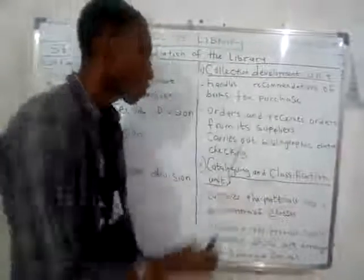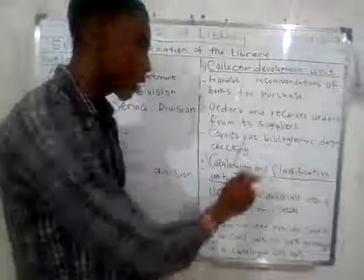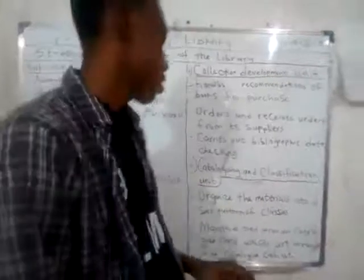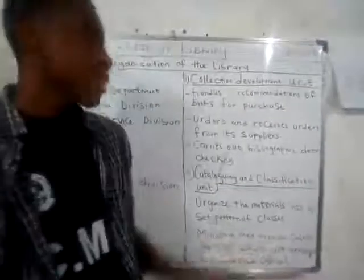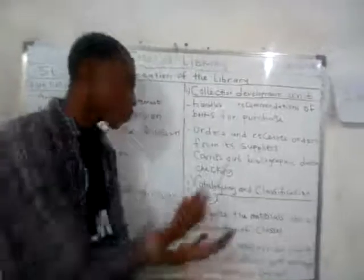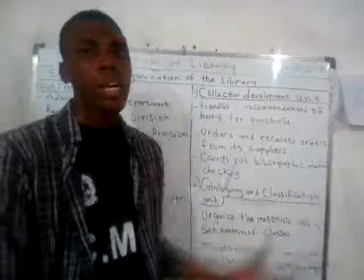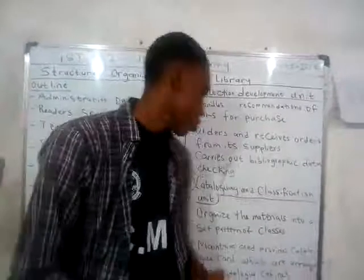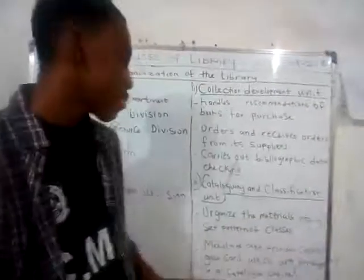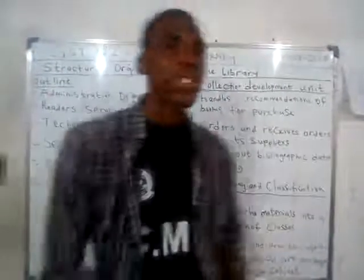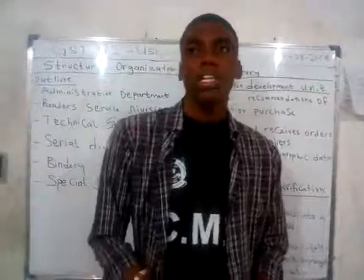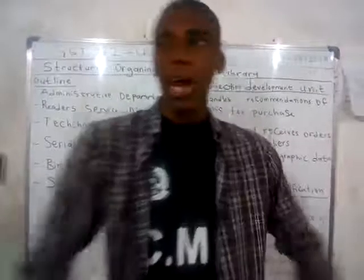The second unit is the Cataloging and Classification Unit. These units organize library materials into a set pattern of classes.